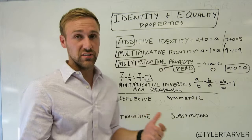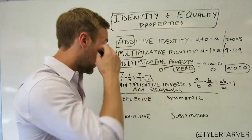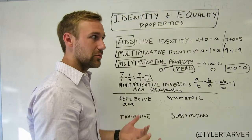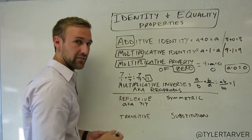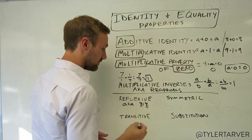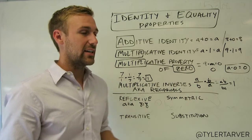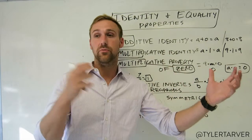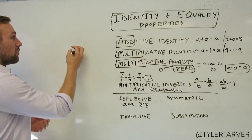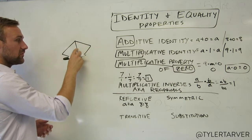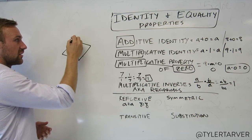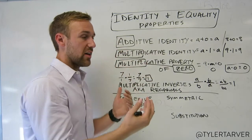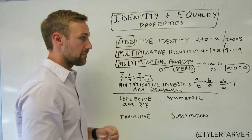The reflexive property: just like a mirror reflects back to you, the reflexive property means that something is always equal to itself. So seven equals seven, eight equals eight — that's actually a property we have to teach. If you're doing a proof and need to prove that something equals itself — like 14 here equals 14 there — the reflexive property gives you that. You'll use it more often when proving two triangles are congruent, saying a shared line in both triangles is equal to itself.